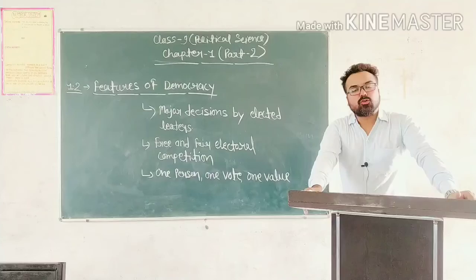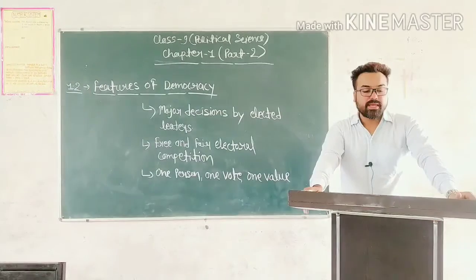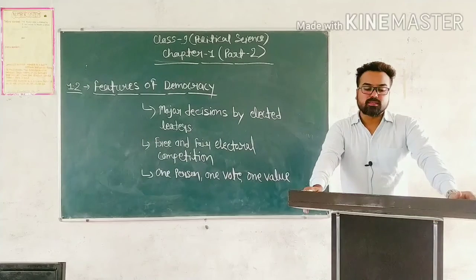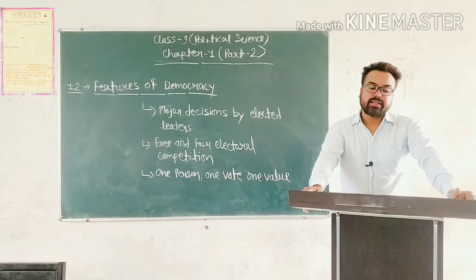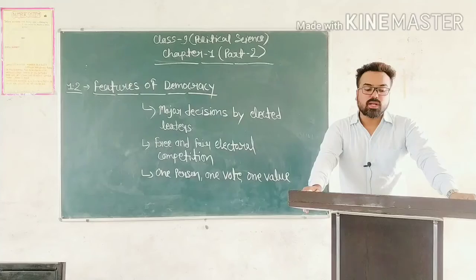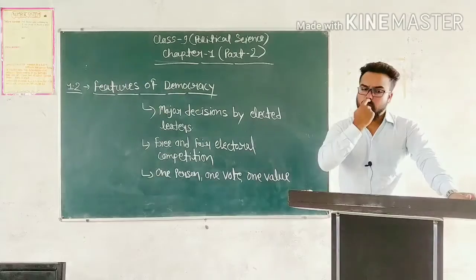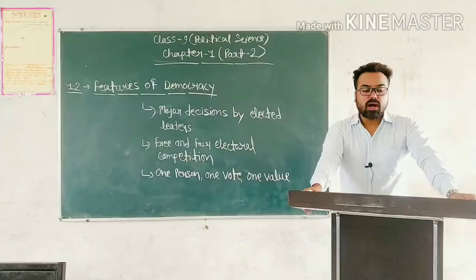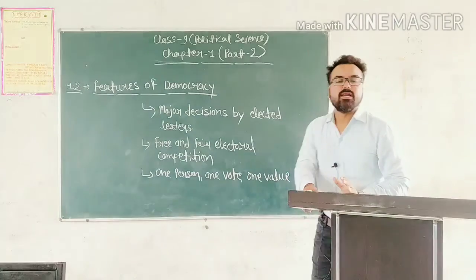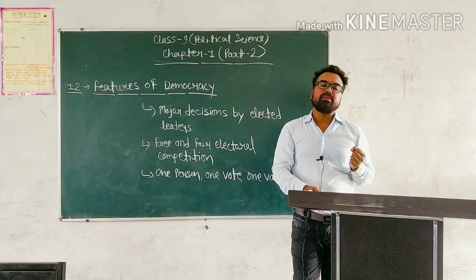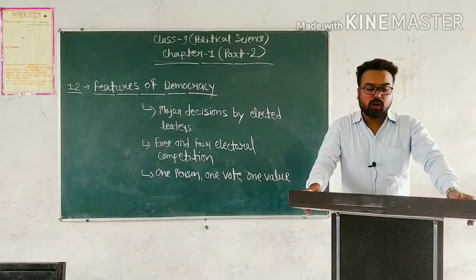This raises many questions. Page number 4 پر آپ دیکھیں: who are the rulers in this definition? What kind of election constitutes a democratic election? Who are the people who can elect the rulers or get elected as rulers? کیا وہ people خود ruler بن سکتے ہیں؟